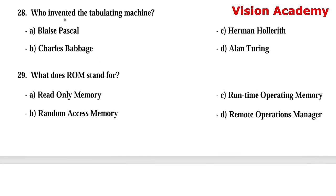Question number 28: Who invented the tabulating machine? Option A: Blaise Pascal. Option B: Charles Babbage. Option C: Hermann Hollerith. Option D: Alan Turing. Option C, Hermann Hollerith, is the right answer.